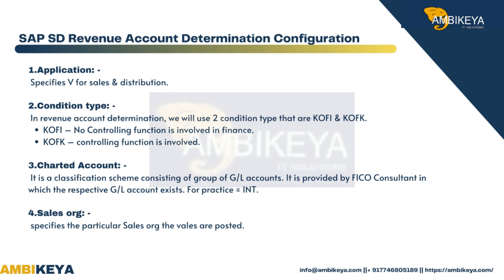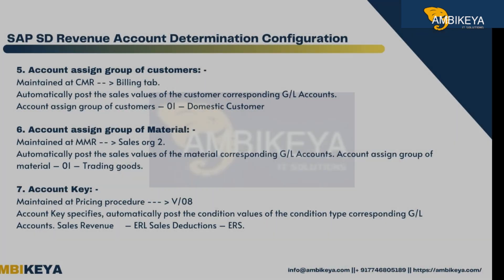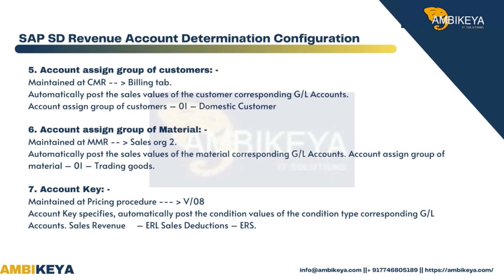For practice, chart of accounts equals INT. Sales org specifies the particular sales org where the values are posted. Account assignment group of customers is maintained at CMR billing tab — it automatically posts the sales values of the customer to the corresponding G/L accounts. Account assignment group of customers: 01 for domestic customer. Account assignment group of material is maintained at MMR sales org 2 — it automatically posts the sales values of the material to the corresponding G/L accounts. Account assignment group of material: 01 for trading goods.